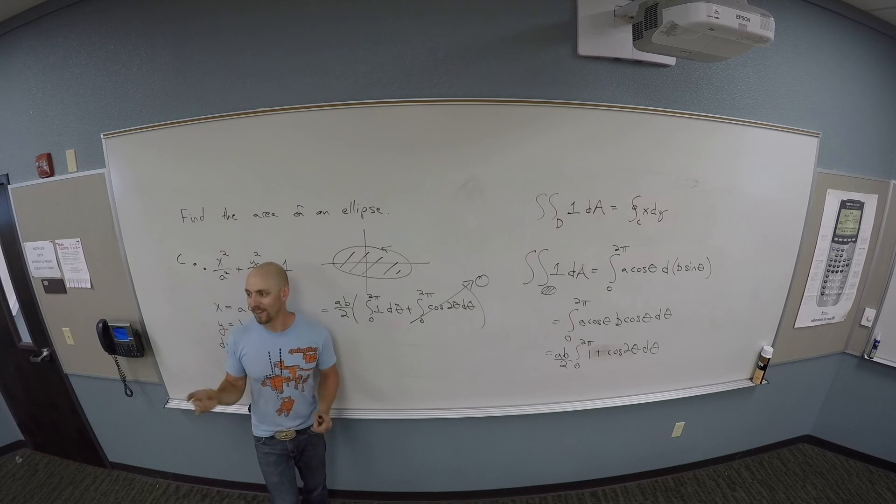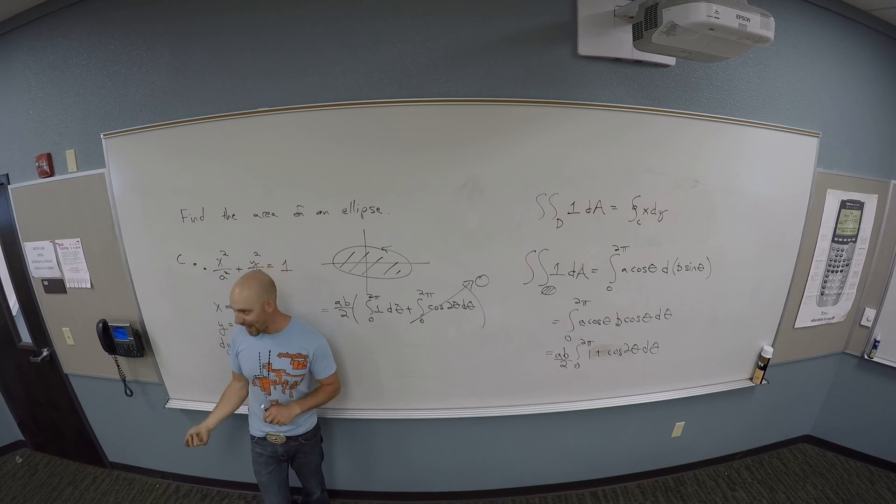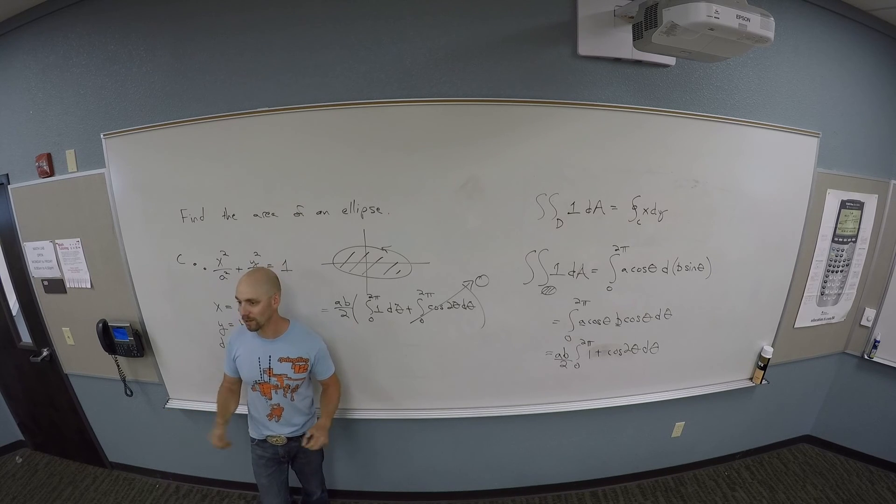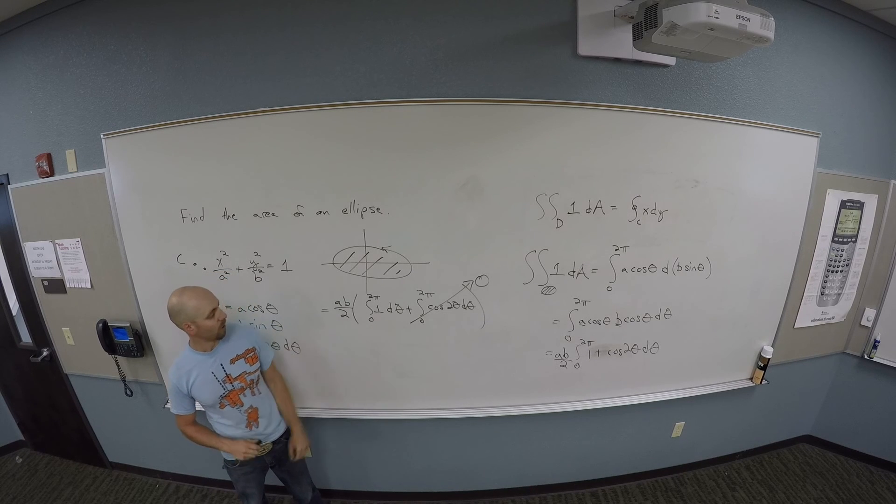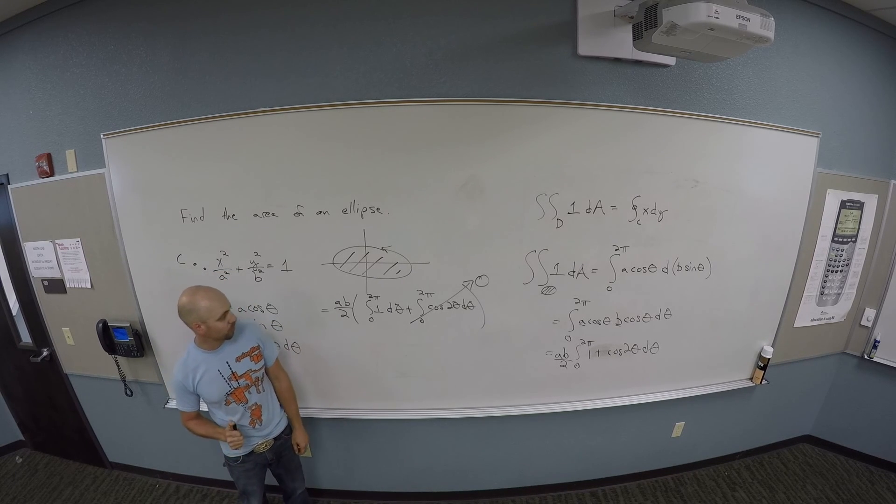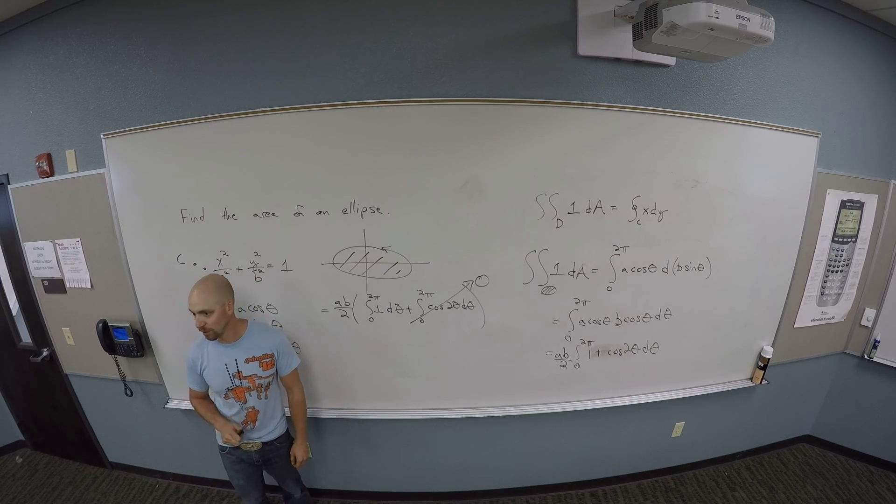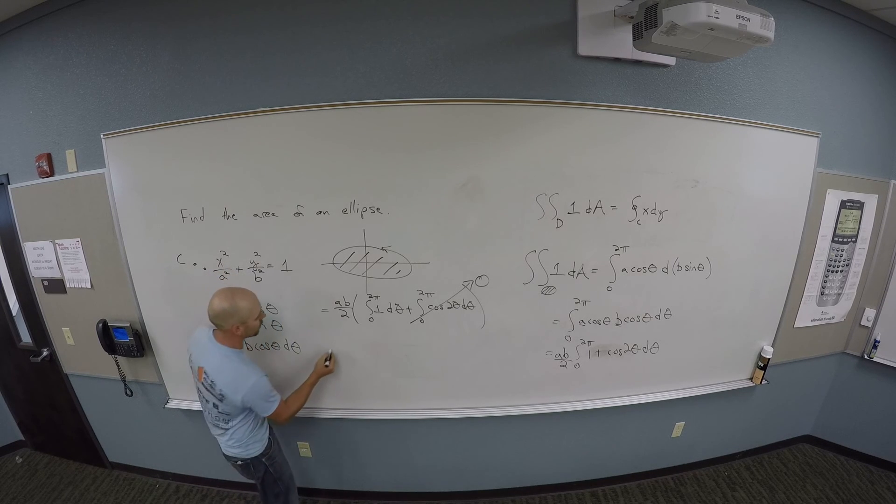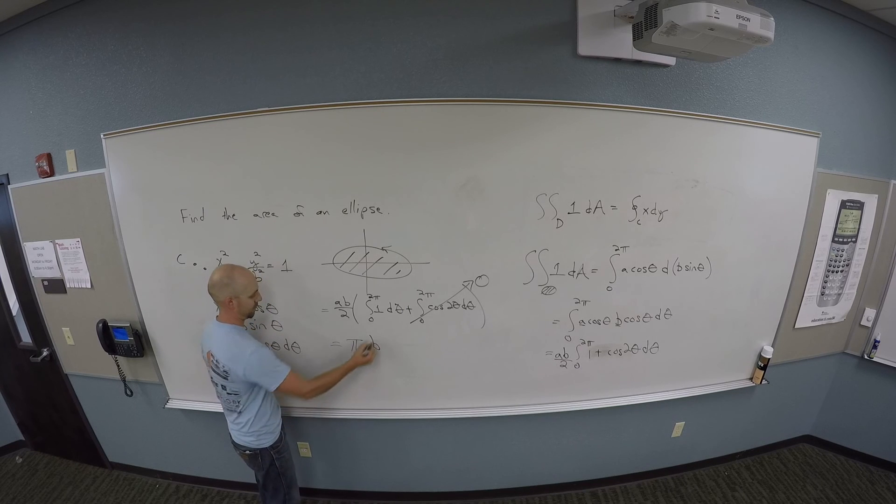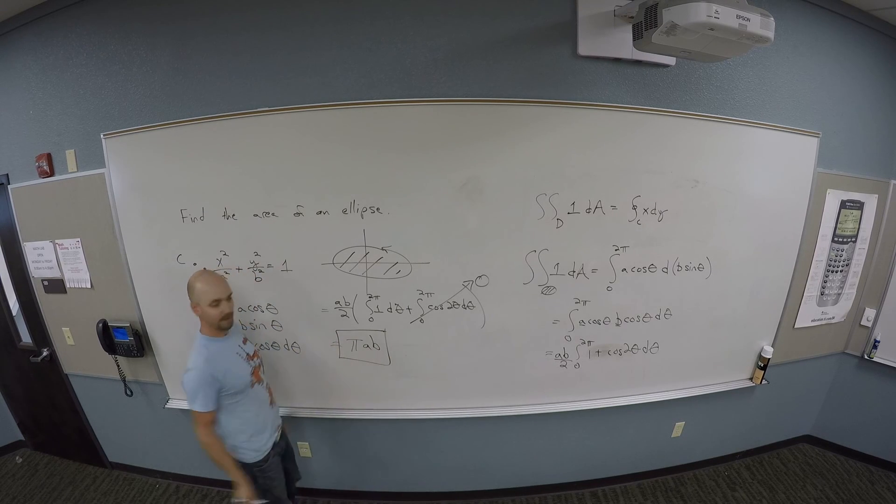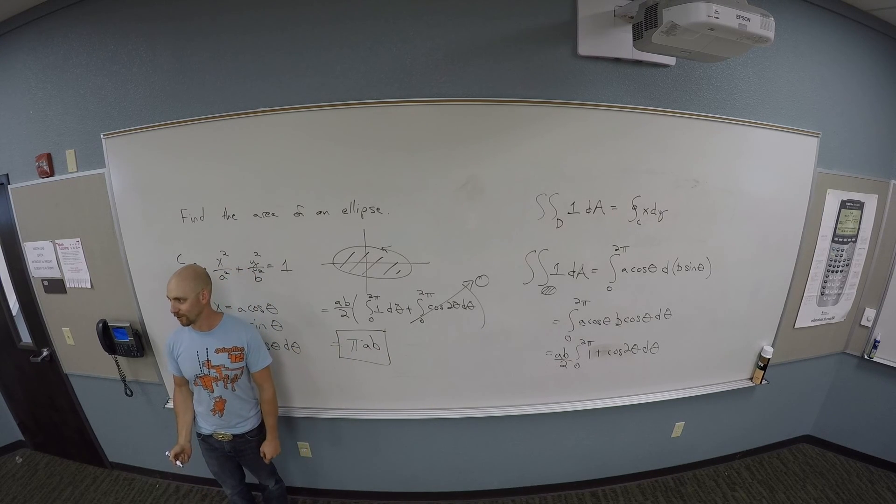This piece zeroes out because it's a trig function over its entire period. If it was over its period and a half, I'd be in trouble, but over its period twice, I can zero it out. So then, what is the integral from zero to two pi of one d theta contributing? Two pi. So you get all told pi a b.